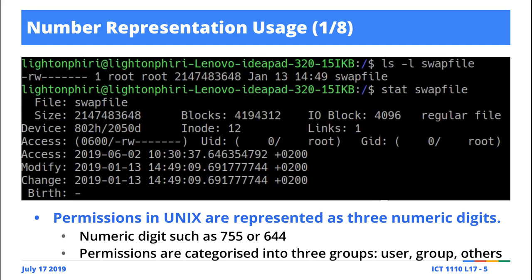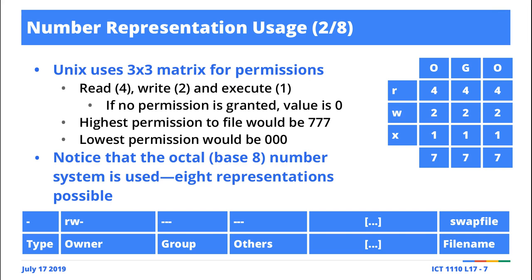We know that it's octal format because if you remember our discussion of this three-by-three matrix, what we realized was that at a bare minimum you could represent the permission with a 0, implying that no permission has been granted at all. And then at the most, you can only have a 7 as the maximum. So 0 to 7 gives you a total of 8 — you are playing around with 8 digits, which is base 8, the octal number system. So this is a classic example of where the octal number system is actually used.